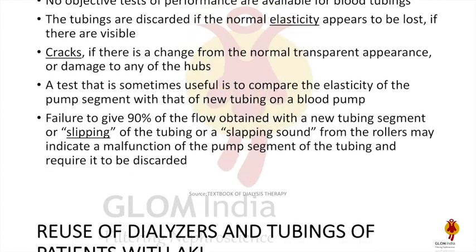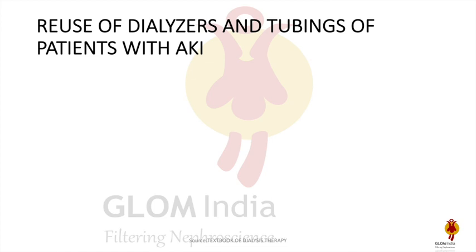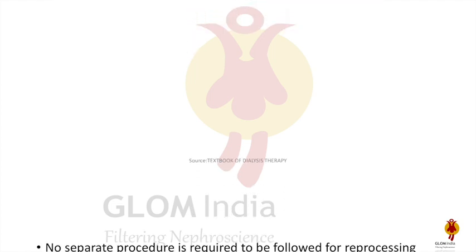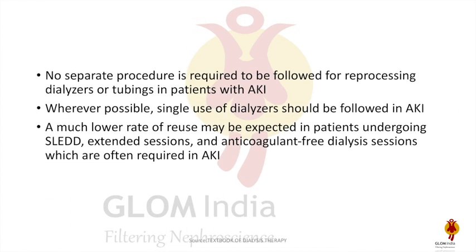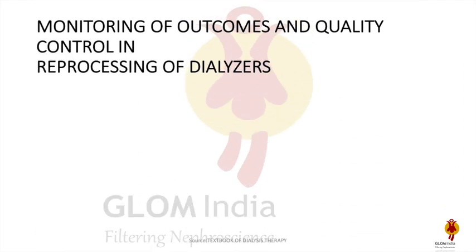Whether we should use the dialyzer and tubing with patients with acute kidney injury — ideally no. The reason is that most of the time, slow or extended dialysis sessions are in use and anticoagulants are generally not used, leading to a significant drop in total cell volume. Also, dialysis is done on a daily basis, so the disinfection procedure is often not completed properly.